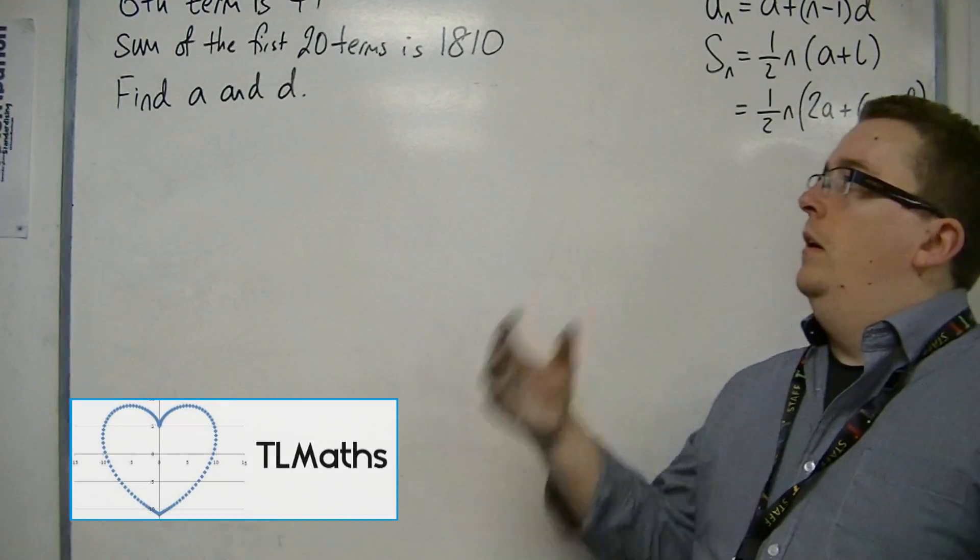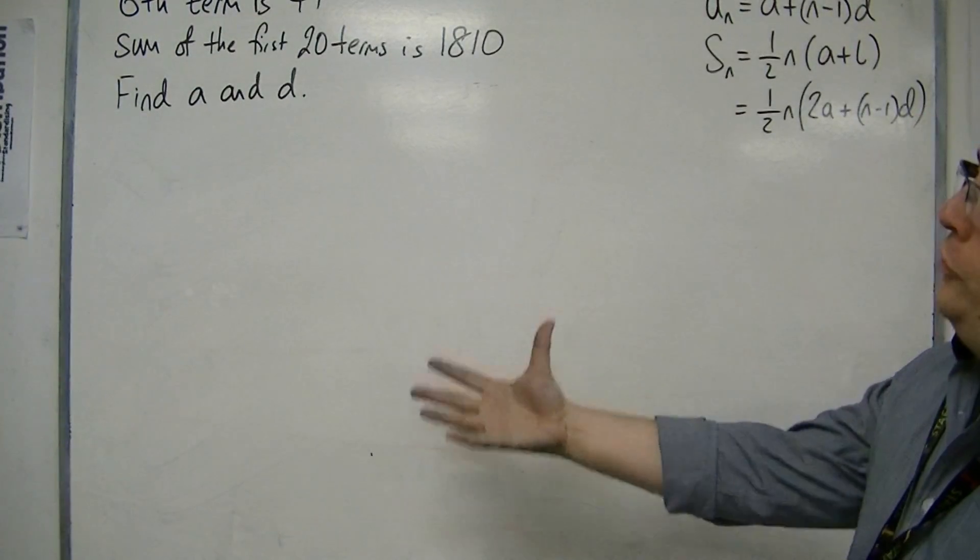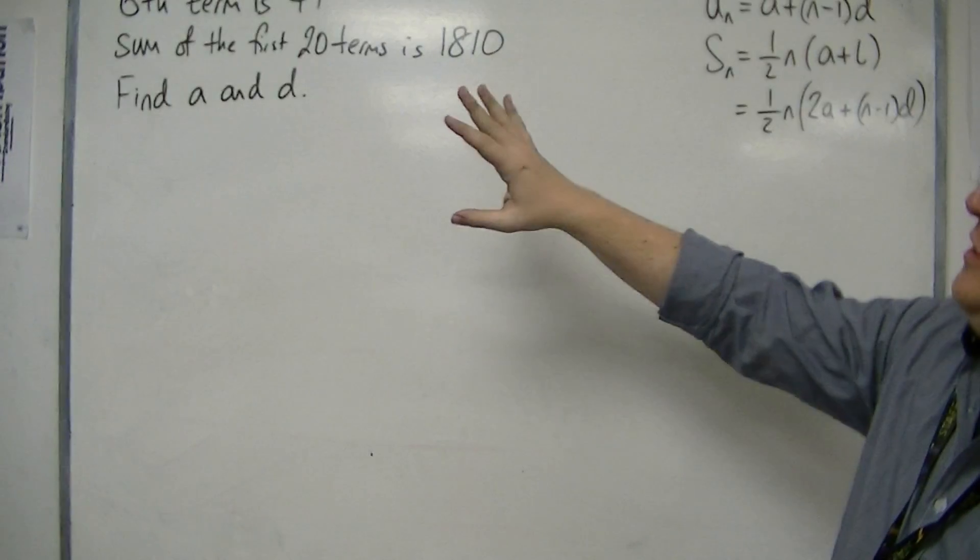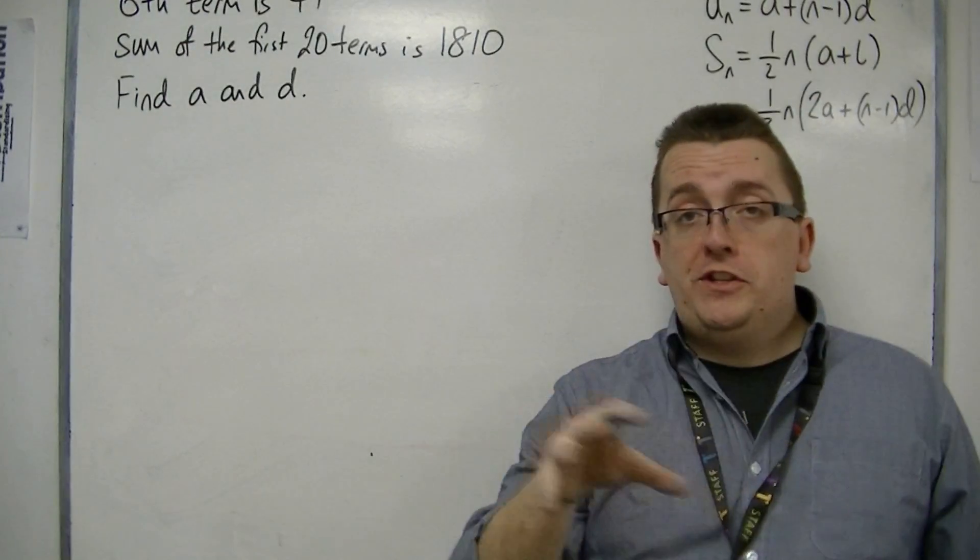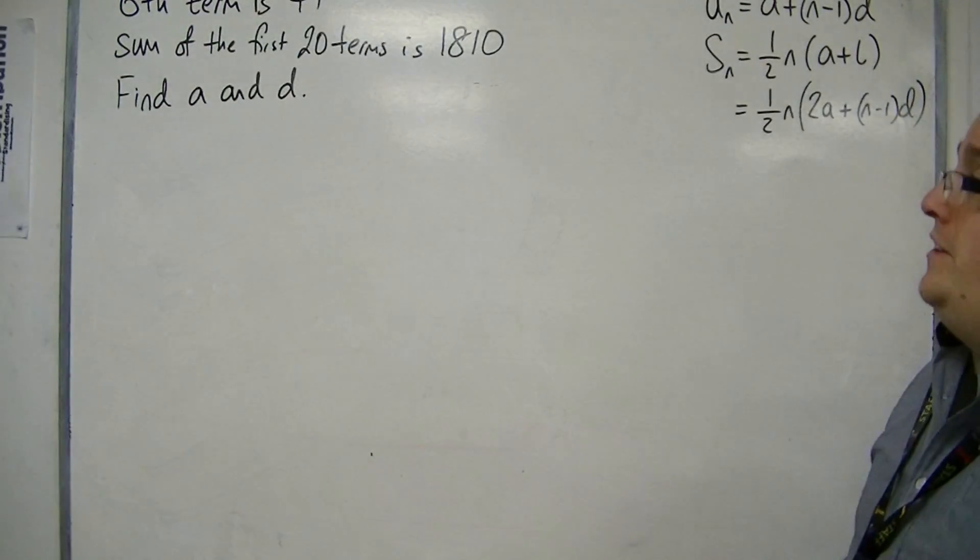Okay, in this problem, what we're given is that we're told the sixth term, that's 41, and we're told the first 20 terms all add up to 1810. And we need to find A and D.